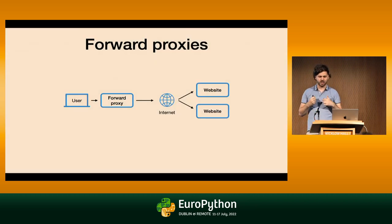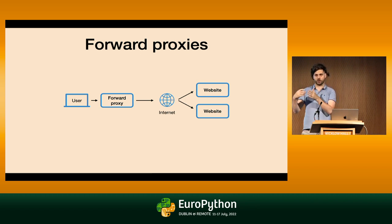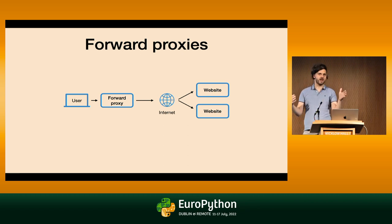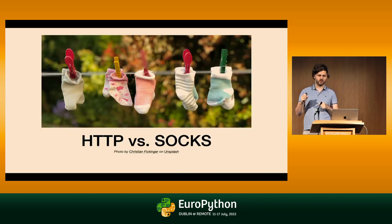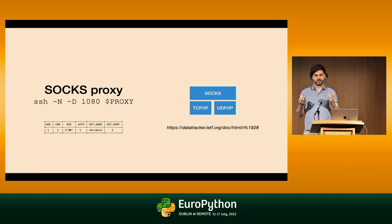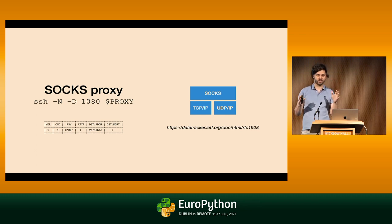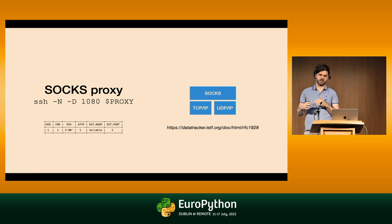By contrast, forward proxies are chosen by the user. I explicitly connect to a proxy and ask it to act on my behalf. I can use that proxy for all websites that I visit, and the website does not need to know that I'm using the proxy — it's my proxy. Another source of confusion could be the difference between HTTP proxies and SOCKS proxies. SOCKS proxies are low-level and quite simple. They are great for local network development and private networks — for example, SSH clients can open a local SOCKS proxy that tunnels your traffic through an SSH connection.